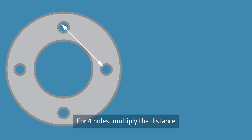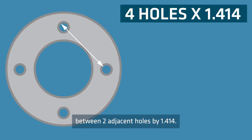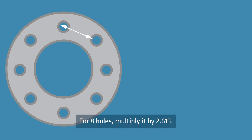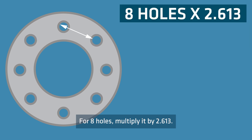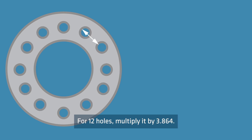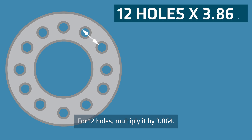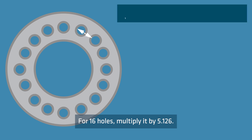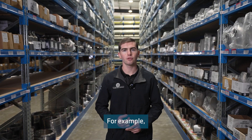For four holes, multiply the distance between two adjacent holes by 1.414. For eight holes, multiply it by 2.613. For 12 holes, multiply it by 3.864. For 16 holes, multiply it by 5.126.